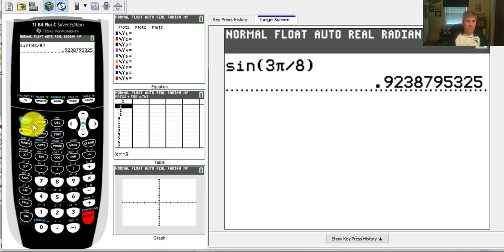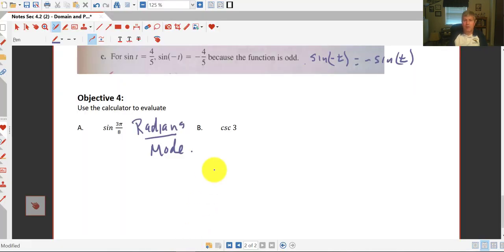And then we're also asked to do the cosecant. As you can see, there's no cosecant button on our calculator. But the cosecant is the reciprocal of sine. Or we can just put 1 over sine of x is equal to the cosecant.